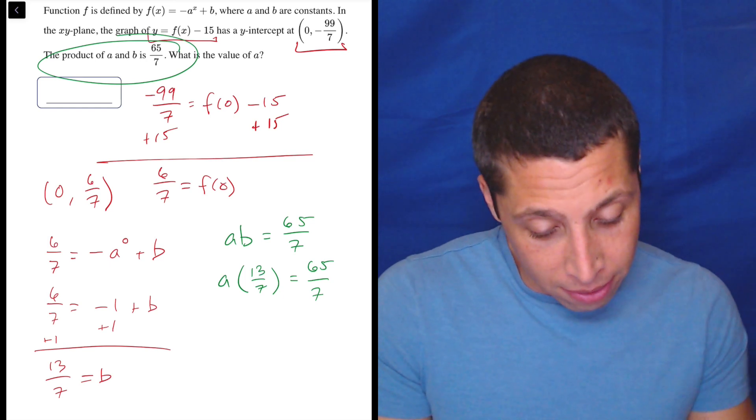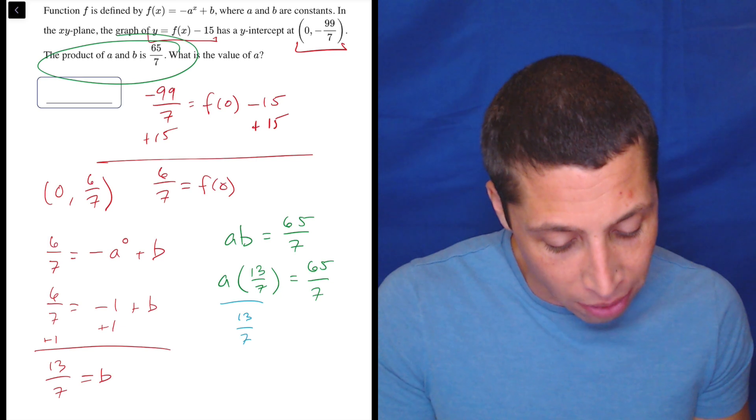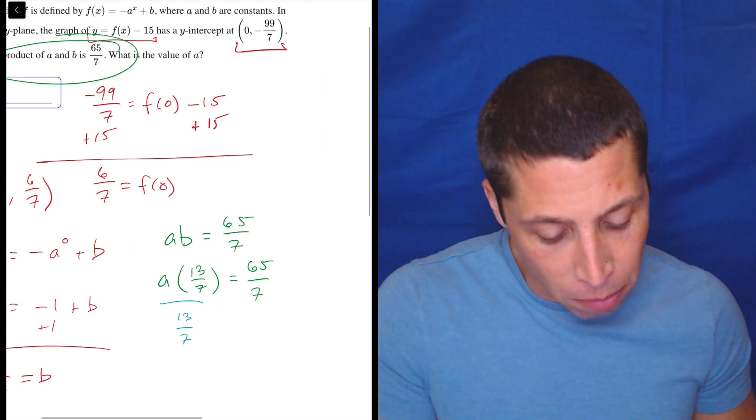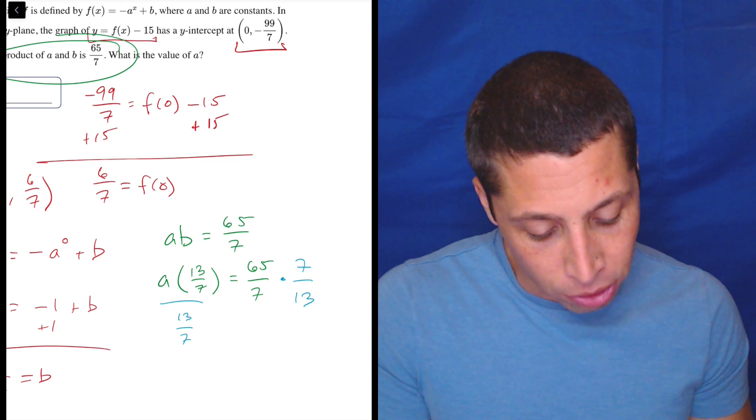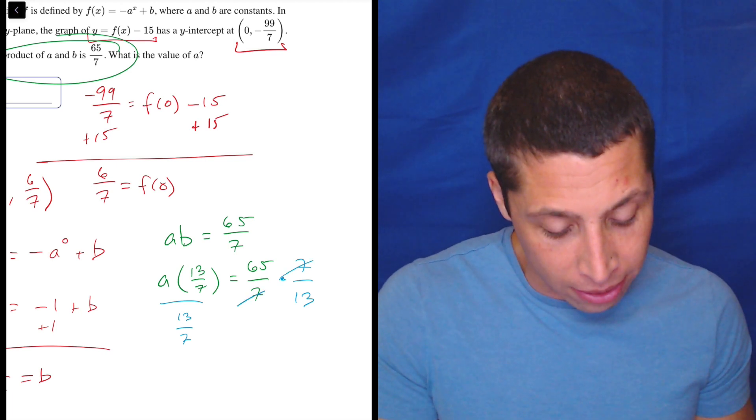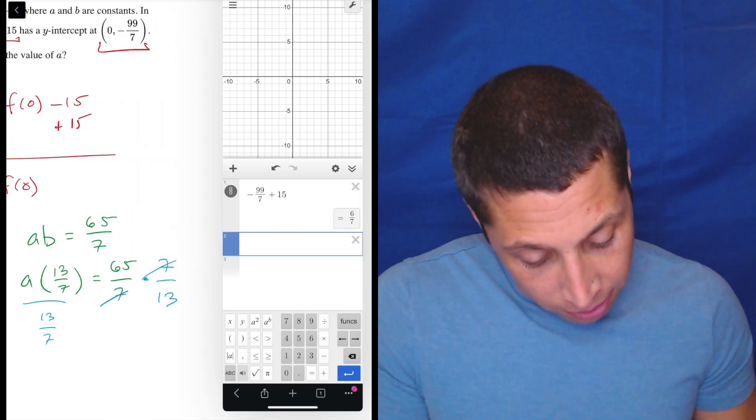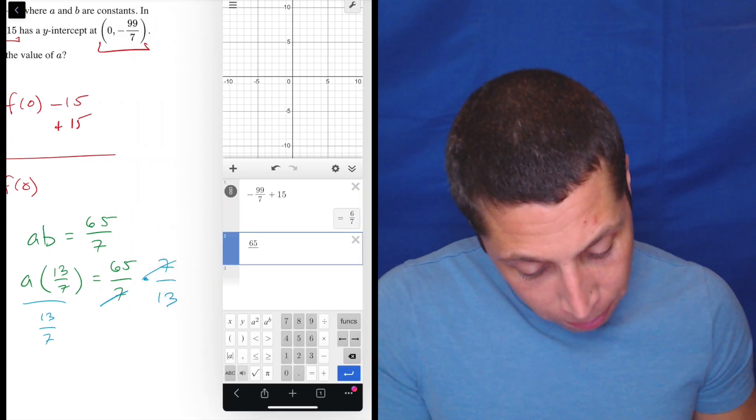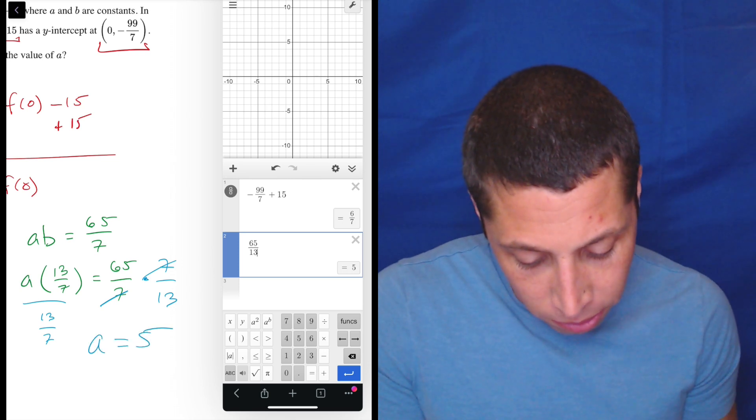So actually I thought I was going to use decimals here, but now that I'm thinking about it, I'm good with it. So I'm going to divide by 13/7, which remember is the same as multiplying by the reciprocal. So that's multiplying by 7 over 13. And so the sevens go and 65 going to 13. I think it does, it goes in, I believe, five times, but let's double check. 65 divided by 13 is five. So A is equal to 5.